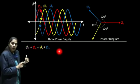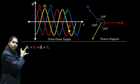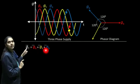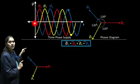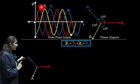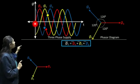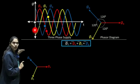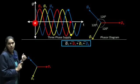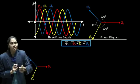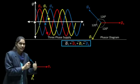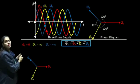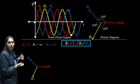We have to plot the phasor and find its resultant by plotting a parallelogram. At the first instant, we can see that the value of φR is 0, φY is at its negative position, and φB is at its positive position. Since the magnitude of φR is 0, we can remove it from the phasor.